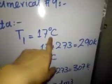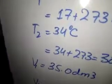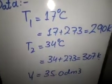You have 17 degrees Celsius, so first of all you have to convert this to Kelvin. Convert 17 plus 273, so this will be 290 Kelvin.